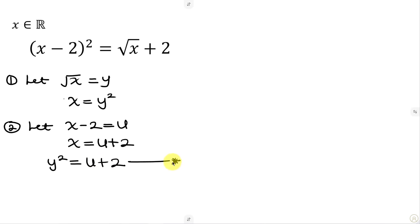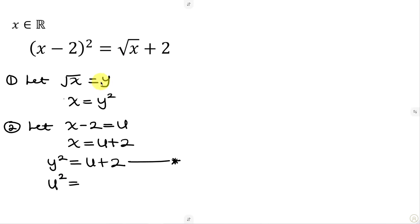To get our second new equation, we turn back to the original question. Using our substitution, x minus 2 is u, so we put u there, giving u². This equals the square root of x plus 2, and since √x = y, we put y here. So u² = y + 2. This is our second new equation.